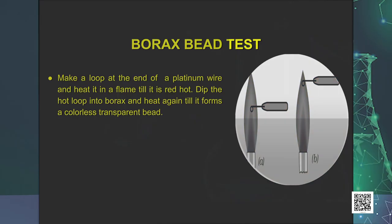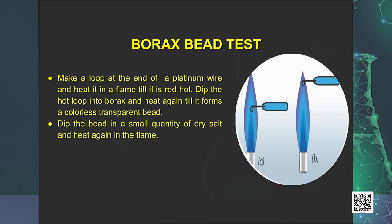To perform this test, prepare a loop on one end of a platinum wire and heat it to red hot. Dip the red hot loop in borax and heat it again till it forms a colorless bead. Then dip this bead in a test salt and heat till it shows a distinct color. The distinct color is characteristic of the test salt and varies from salt to salt. Similarly, when borax is heated in a Bunsen burner flame with cobalt oxide on a loop of platinum wire, a blue-colored cobalt borate bead is formed.